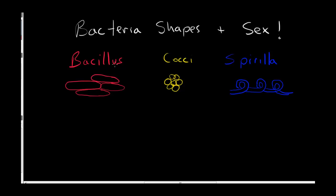And so we classify them by these three basic shapes: bacilli, cocci, and spirilla.